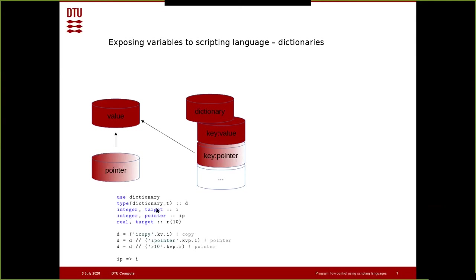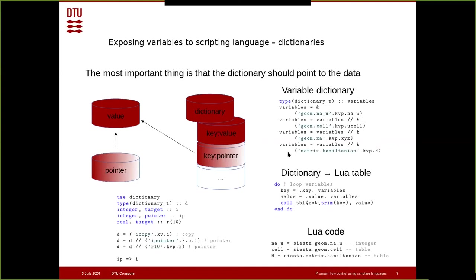Here is functional code: you have a dictionary, an integer with the 'target' attribute, a pointer, and a real. When you populate a dictionary you can do a key-value copy operation, or a key-value-pointer operation where there's no copy involved. You need to deal with pointers and make sure you don't lose them. To do the actual exchange with Lua, you create a single variable that is a dictionary of all your keys and values — typically key-value pointers so you point to the actual value if you want to change it.